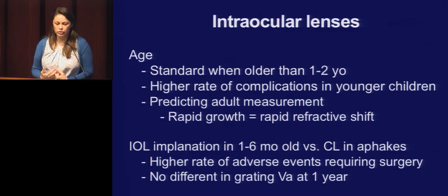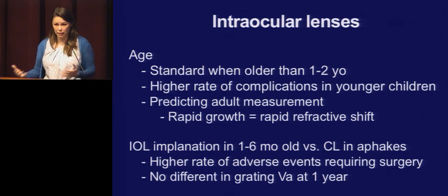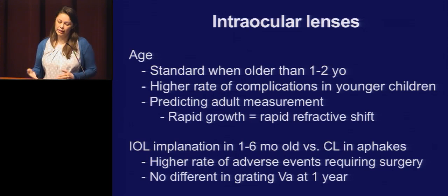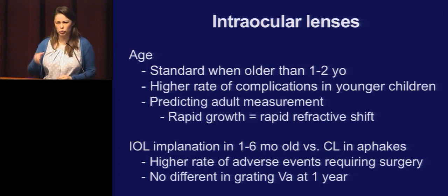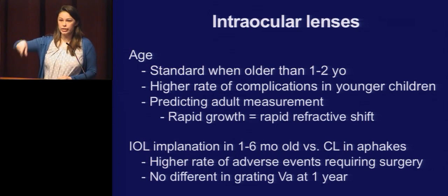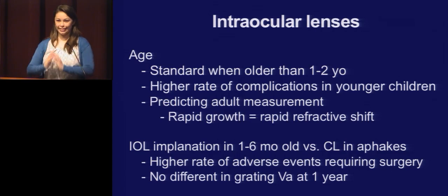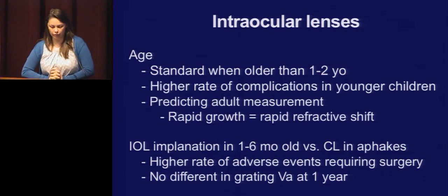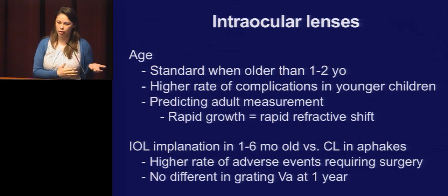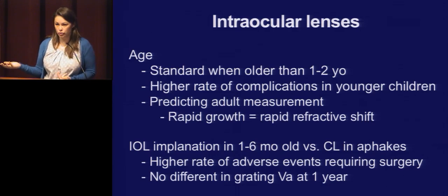A study looked at IOL implantation in children one to six months old versus using a contact lens and leaving them aphakic. The really young kids had a higher rate of adverse events requiring surgery. Interestingly, at one year, grating visual acuity outcomes were similar. But the bad part is more complications and potentially more surgery. You can always consider secondary implantation when they're older.